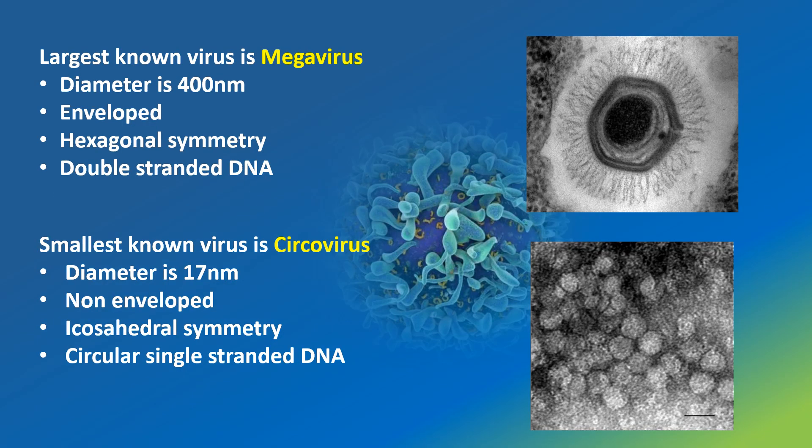Some interesting facts about viruses: the largest known virus is megavirus, with a diameter of 400 nm. It is an enveloped virus with hexagonal symmetry and possesses double-stranded DNA. The smallest known virus is circovirus, with a diameter of 70 nm. It is a non-enveloped virus with icosahedral symmetry and possesses circular single-stranded DNA.